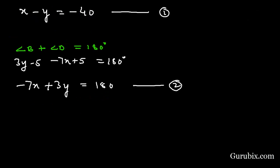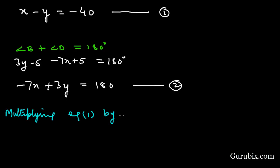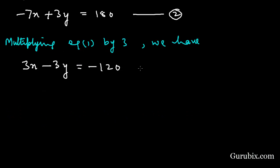We shall apply the elimination method to solve this pair of linear equations. Multiplying equation number one by 3, we get 3x - 3y = -120. This is equation number three.